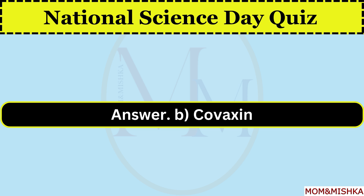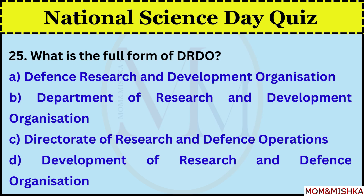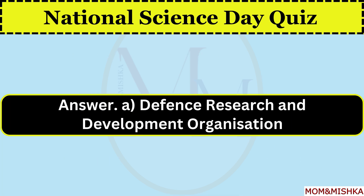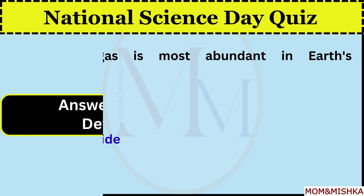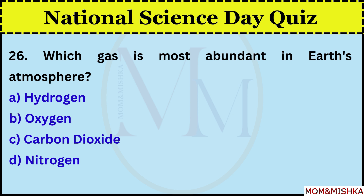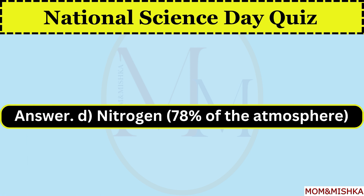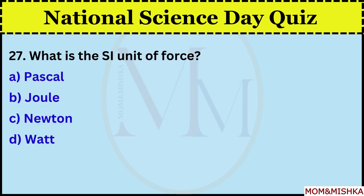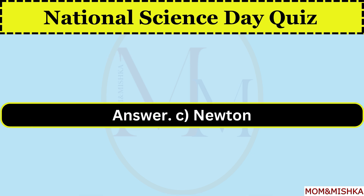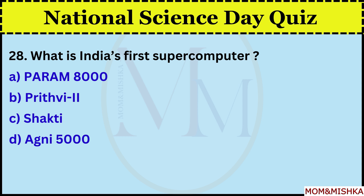What is the full form of DRDO? Defense Research and Development Organization. Which gas is most abundant in Earth's atmosphere? Nitrogen, making up 78% of the atmosphere. What is the SI unit of force? Newton.